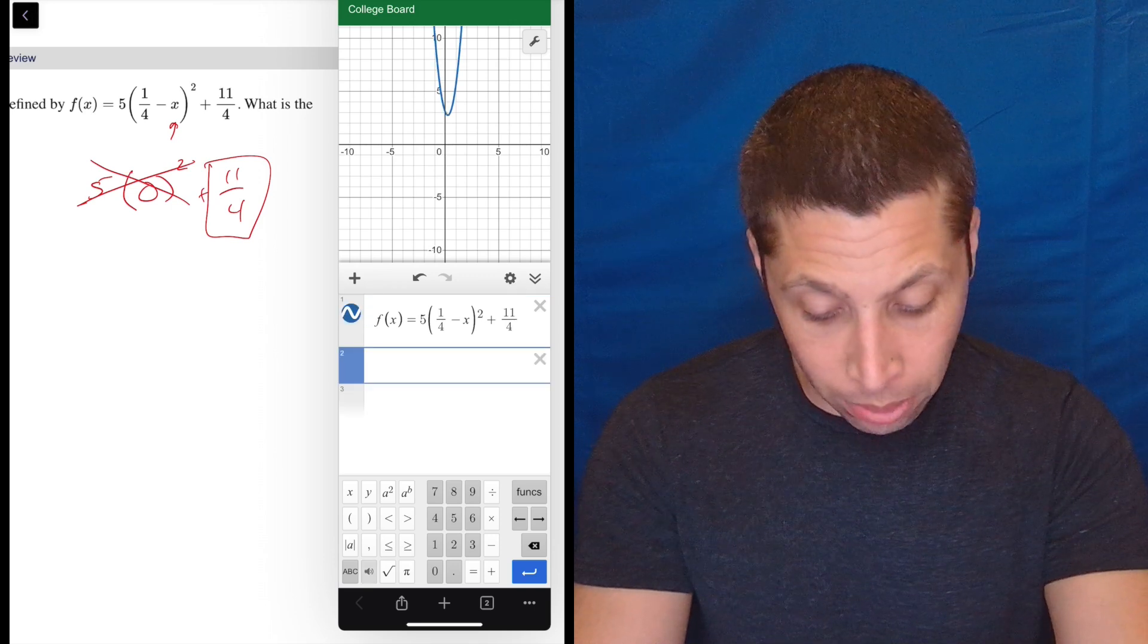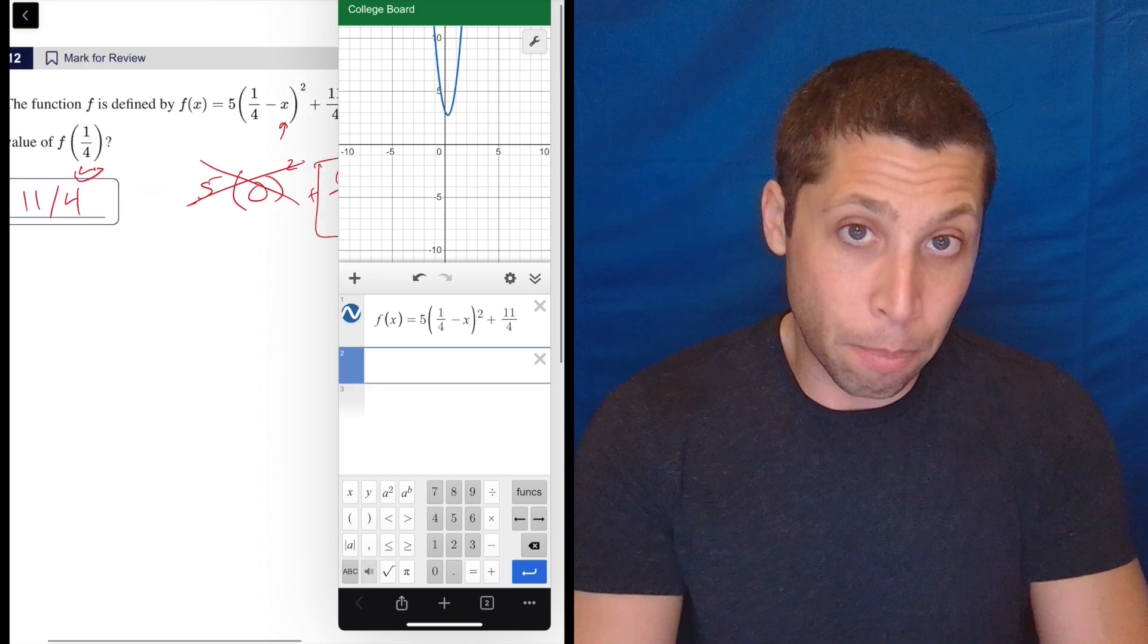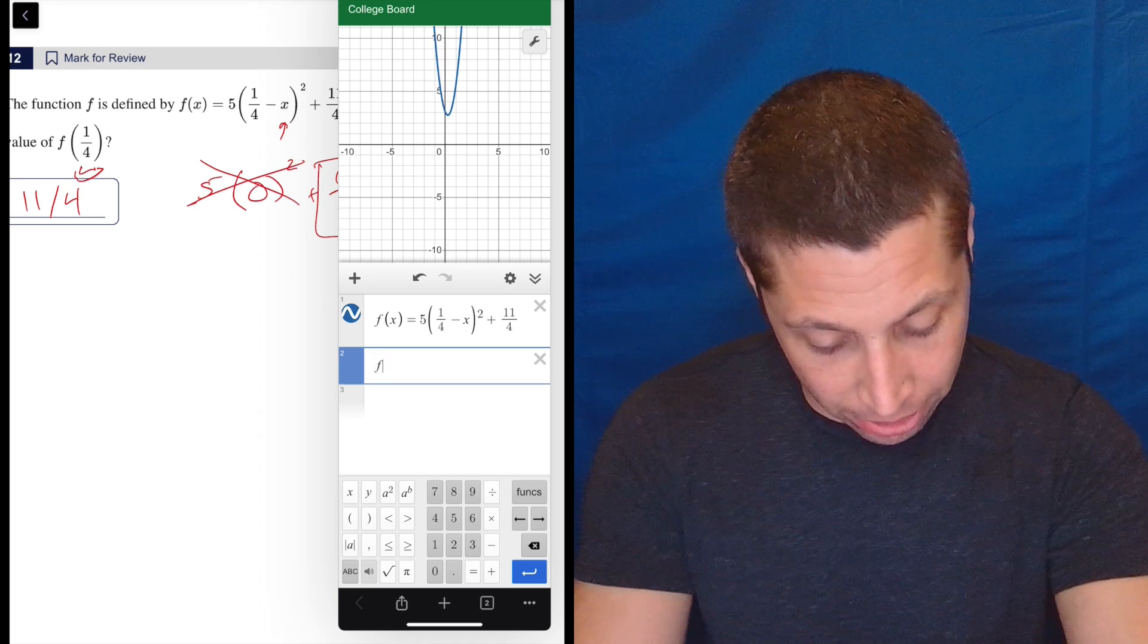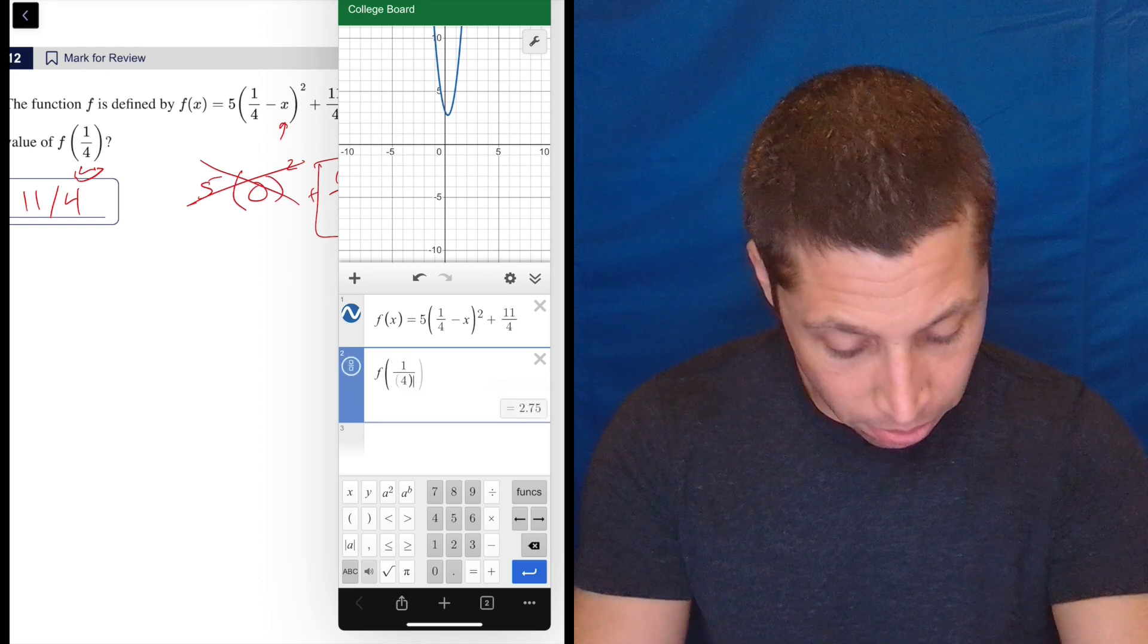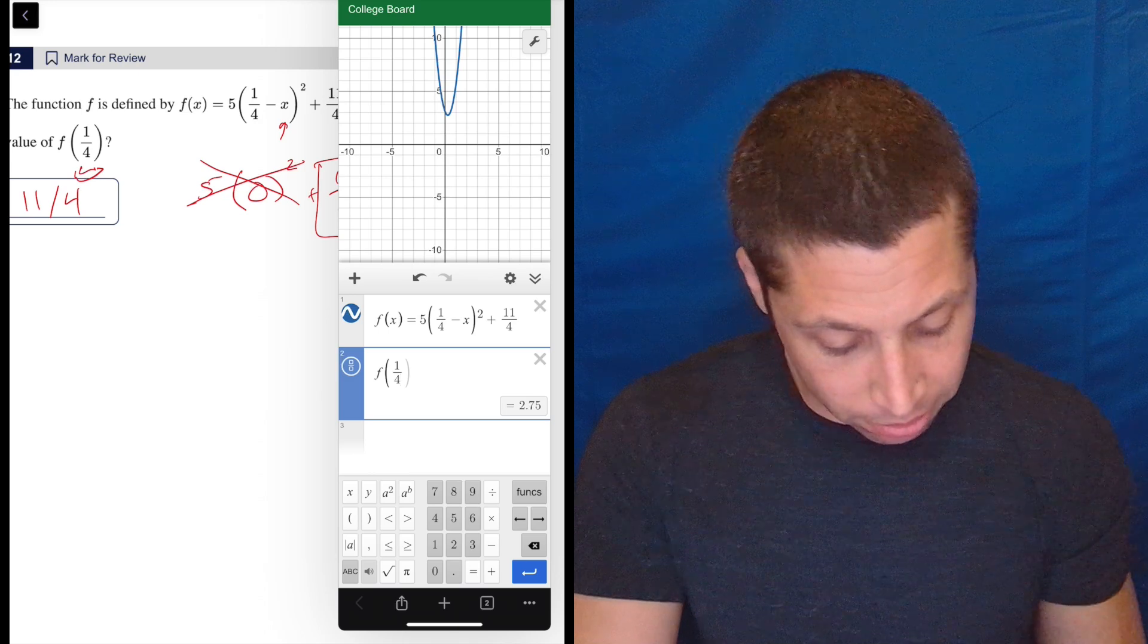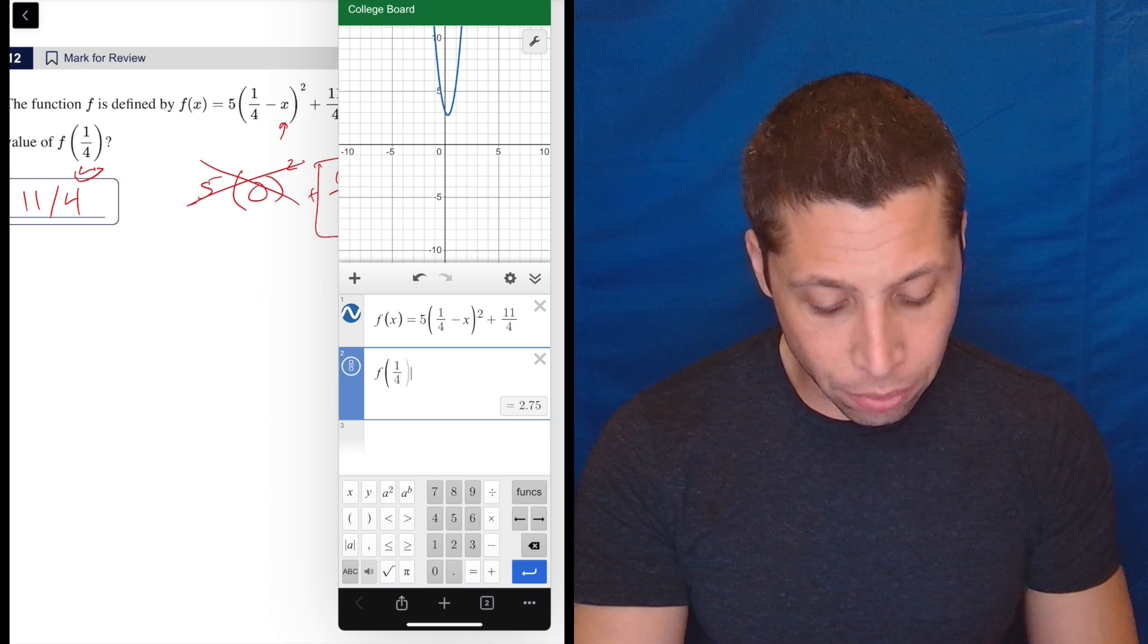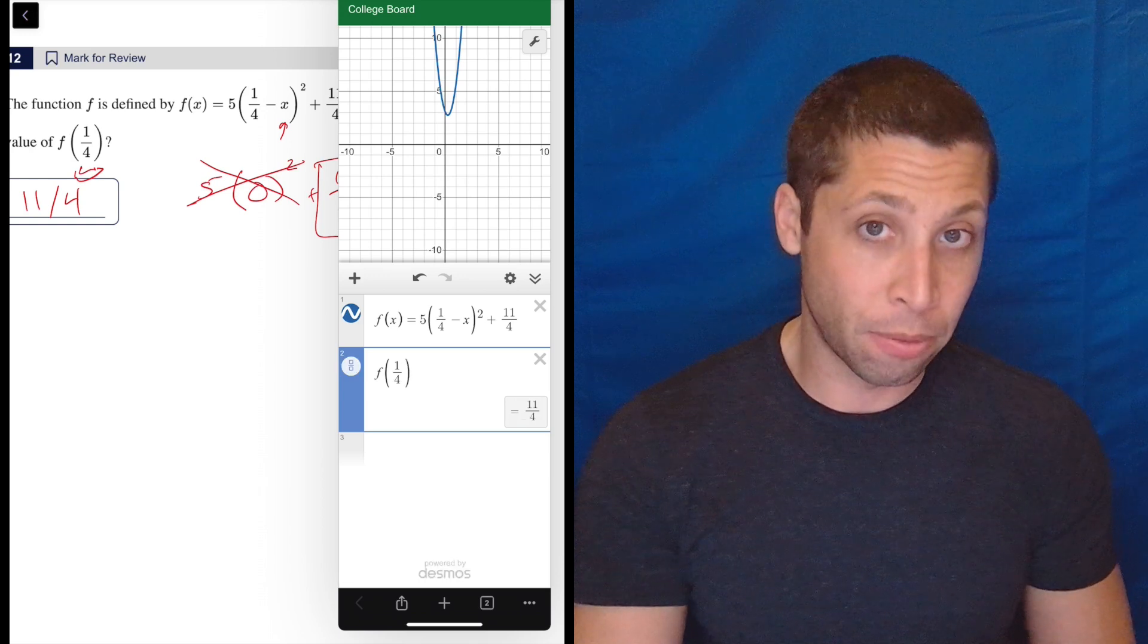Now I'm just going to go down to a new line, and what did they want? Just type exactly what they wanted: f of one-fourth. I messed up the parentheses, but there you go. There's that 2.75. If we wanted that as a fraction, just tap the little fraction button to the left there underneath the two, and eleven-fourths.